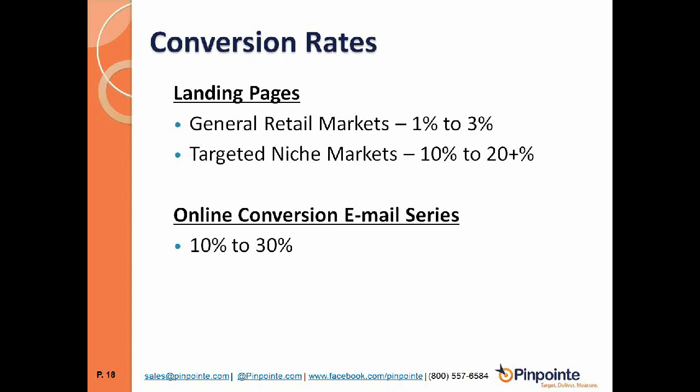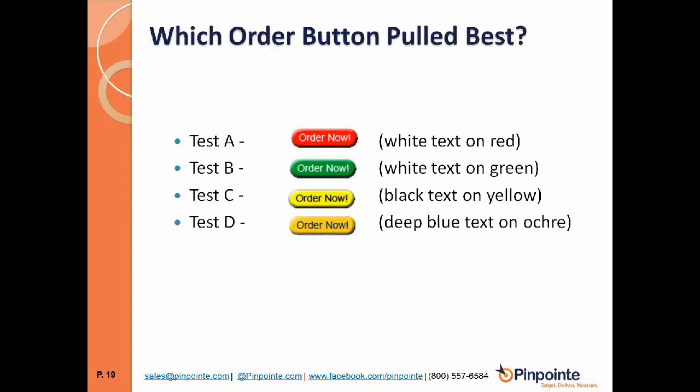Here's an interesting test: a company tested only the color of the order button on their landing pages. They tested four versions: red with white text; green; black text on yellow; and navy blue on an ochre background. You can make an argument why each should win — red stops and grabs attention, green means go, yellow pops out — though navy on ochre seemed the least likely winner.